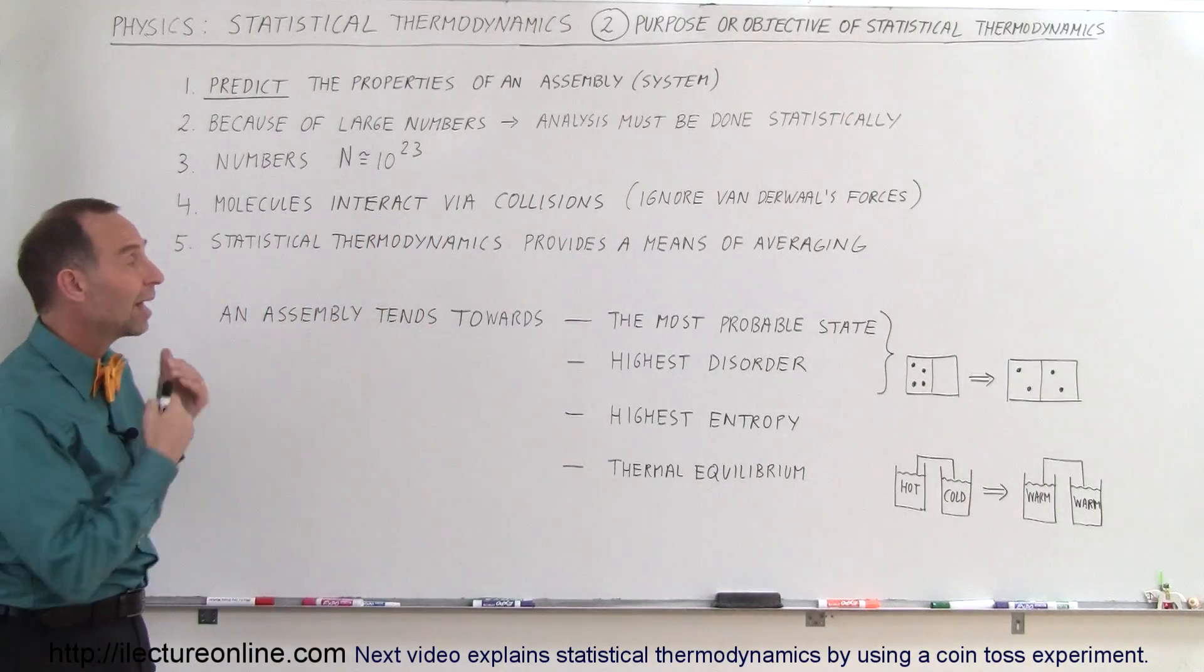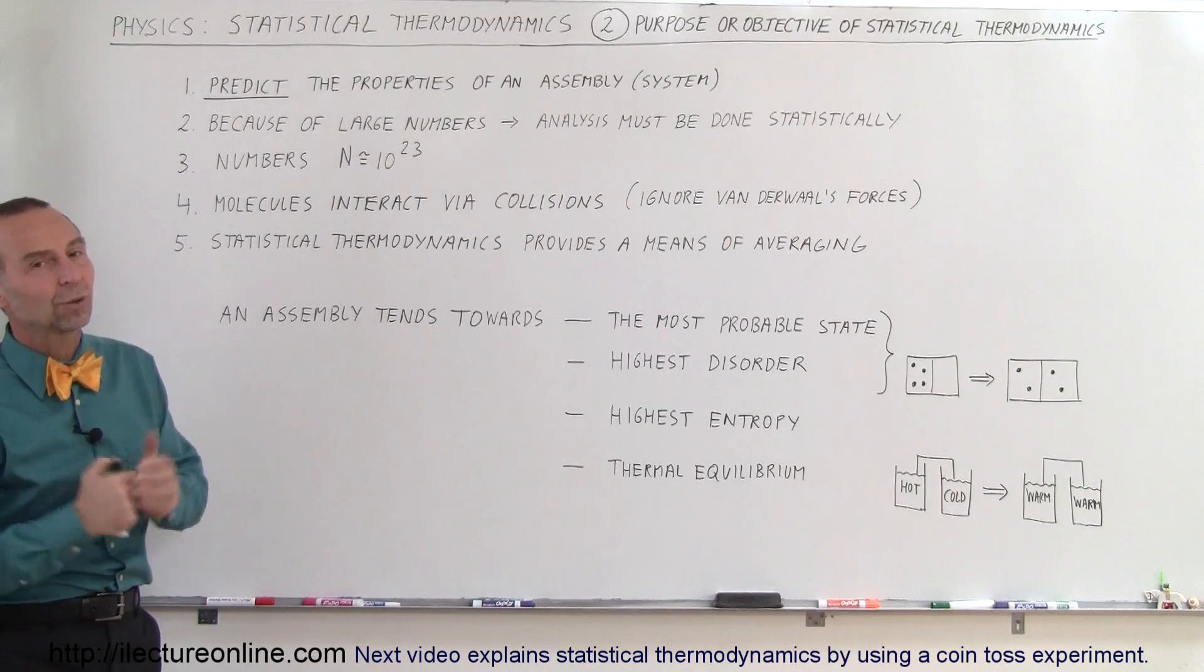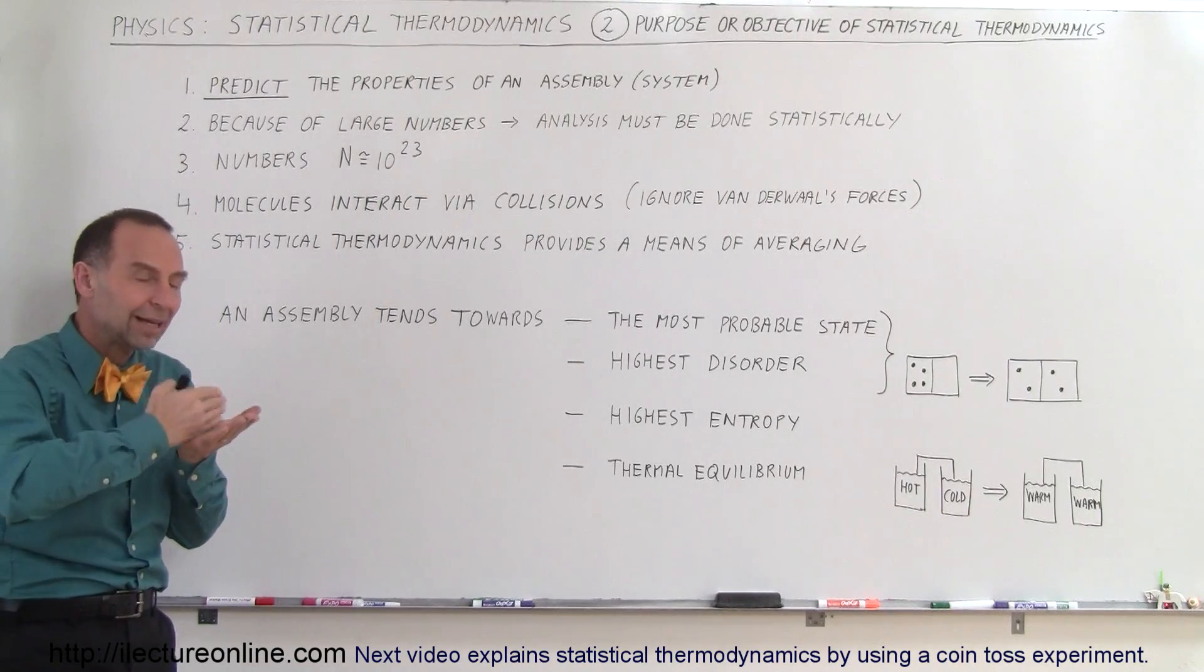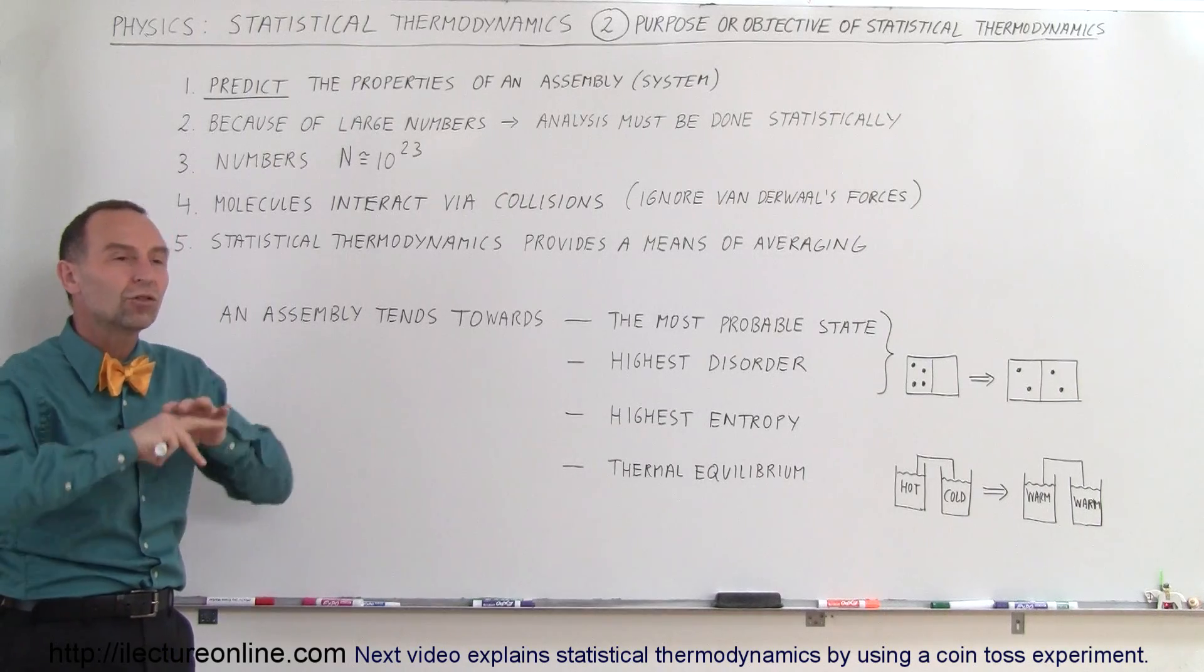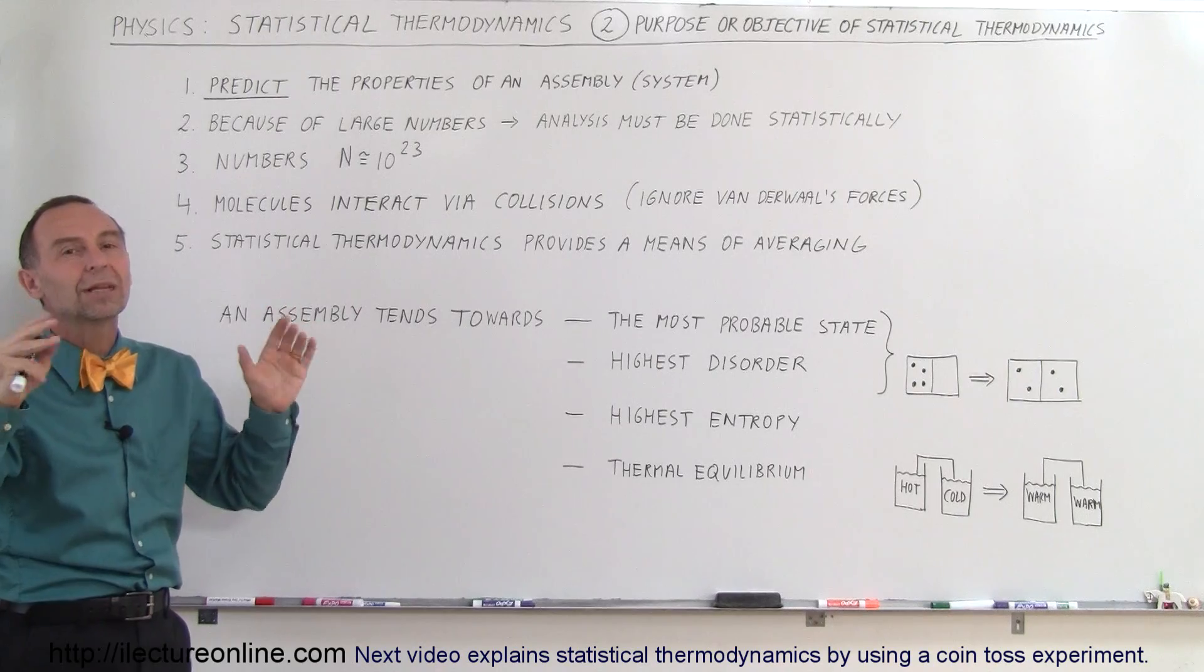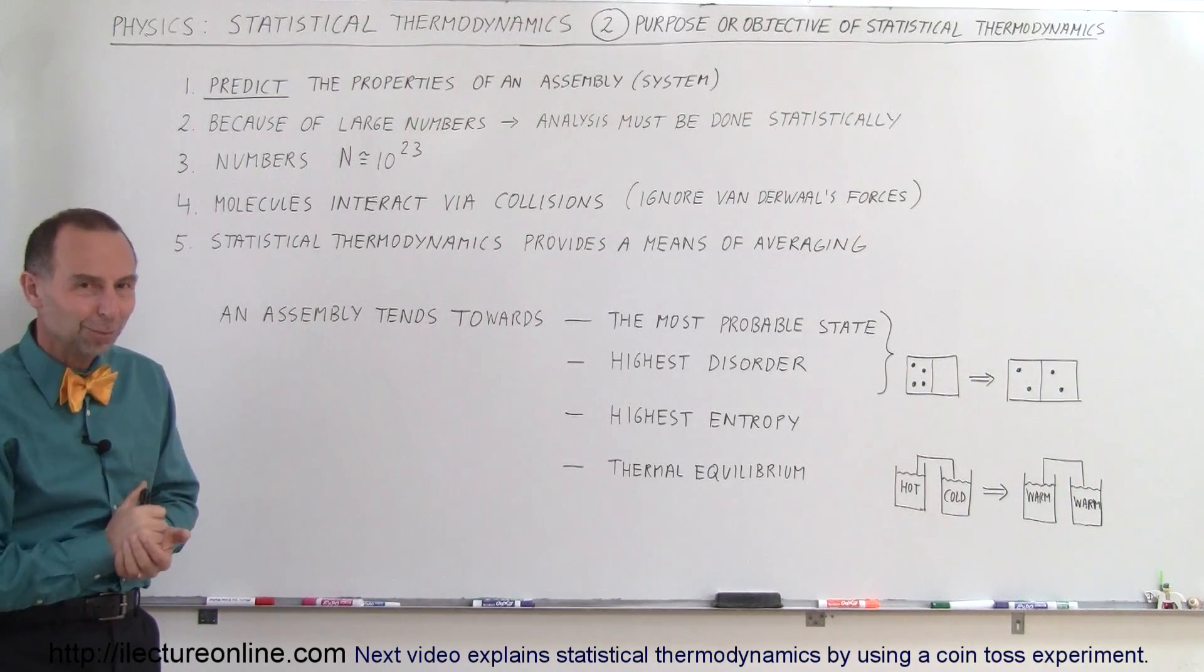So statistical thermodynamics helps us calculate the probabilities of these things happening. And that's what it's all about. Again, large numbers, can't figure out by calculating the energy of each one. We can just average it out and tend to come up with a probability equation that says this is the probability that this state will exist. And that's why we use statistical thermodynamics.